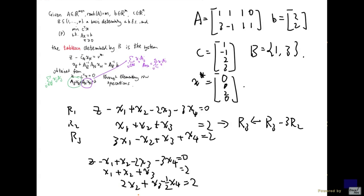Now, I'm going to subtract row 3 from row 2. Then this becomes minus x_2, minus x_3. And this is plus 1 half x_4. And this is 0.